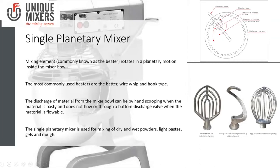There are different kinds of beaters that can be used, such as the wire whip, hook type, or the batter beater. The batter beater is used for cake mixing. For cream whipping, you use what is called the egg whisk or the whipper. The dough hook is used for dough kneading at low speeds.